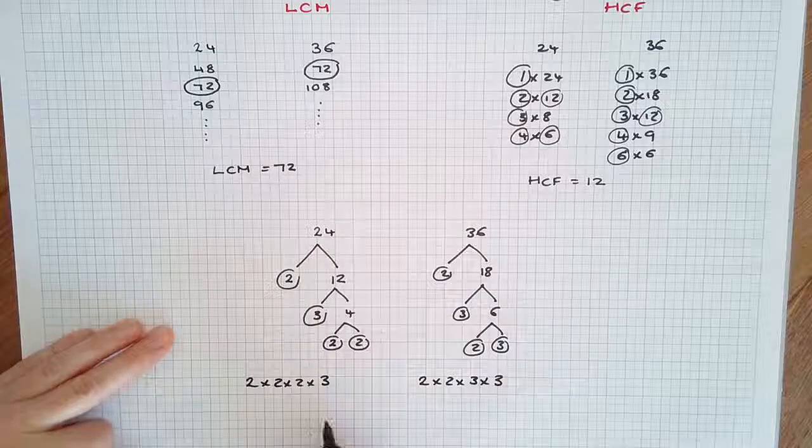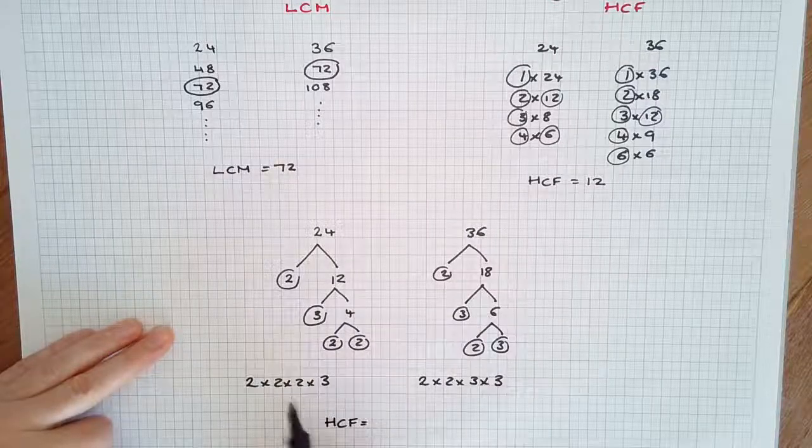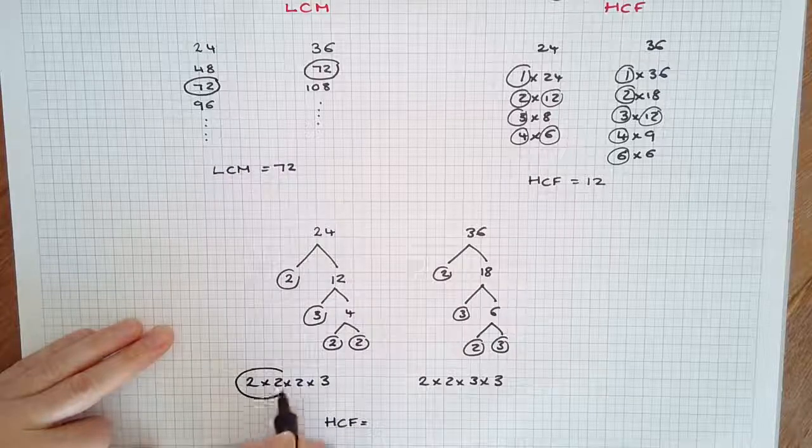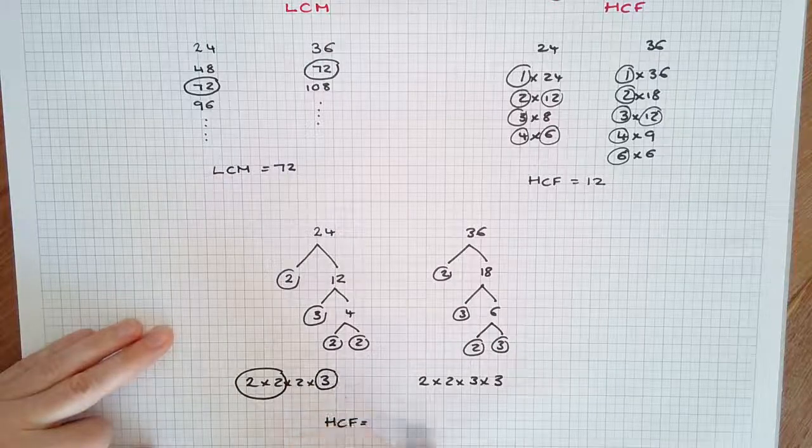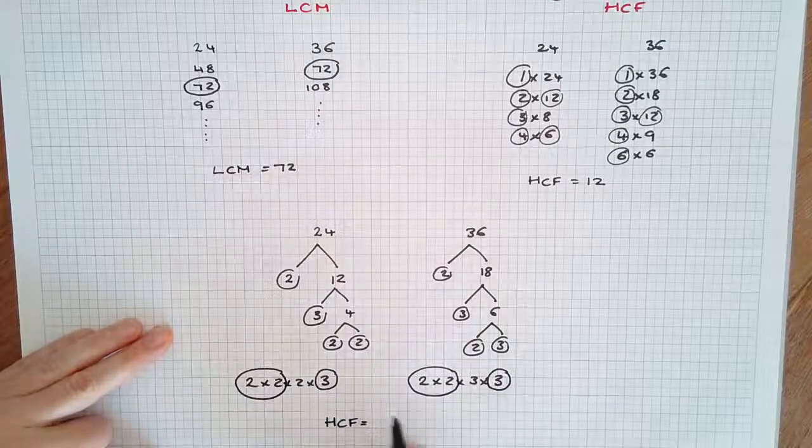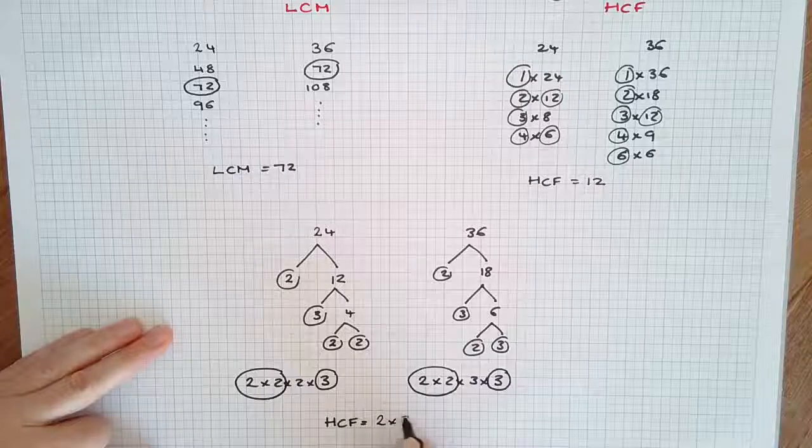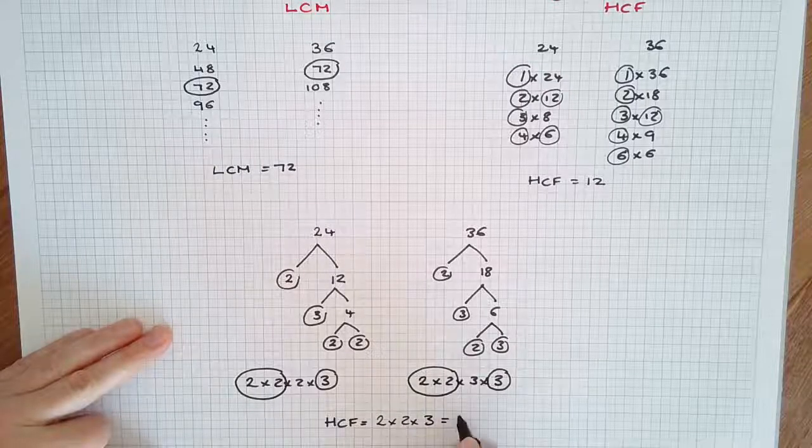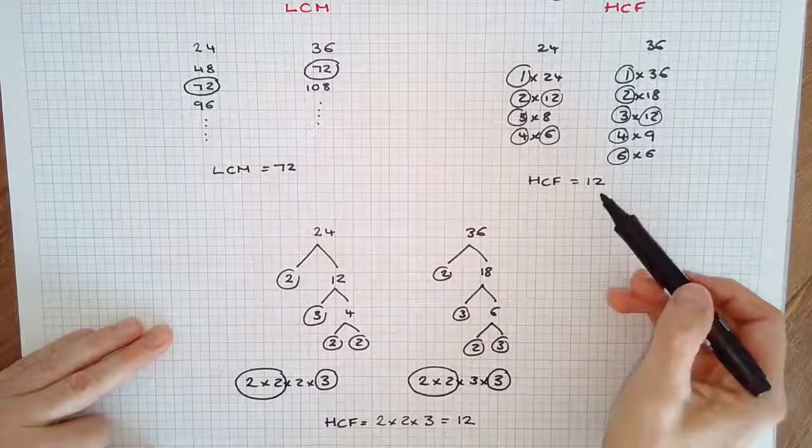Now the highest common factor will be the prime factorization that they have in common. You can see they both have a 2 times 2 and a times 3 in common. So the highest common factor is 2 times 2 times 3. 2 times 2 is 4, times 3 is 12, and that's what we got earlier.